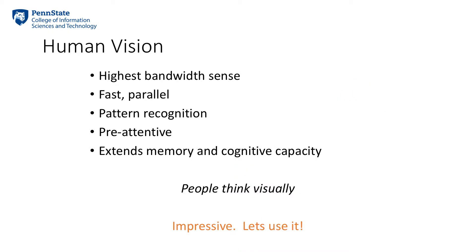We could spend many lectures on human visual systems — it's a very rich area. However, for the interest of time, I would like to highlight a few major characteristics of the human vision system as an input channel. First, the human visual system has the highest bandwidth compared to other input channels. It also has the nature of parallel processing — we have many sensors in our eye that can take input in parallel fashion. Human visual systems are also trained to perform pattern recognition; we are very fast at perceiving clusters, outliers, and any regularities.